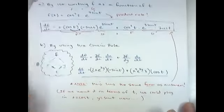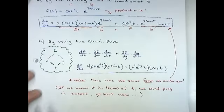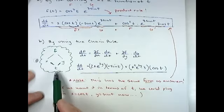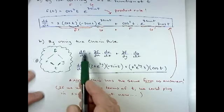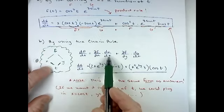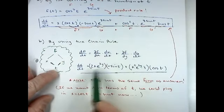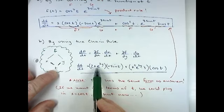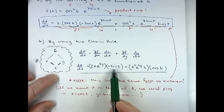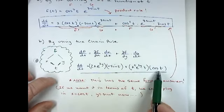That direct substitution is a fairly lengthy product rule. If we use the chain rule approach as we did the previous problem, using our mapping — f is a function of x and y, but both x and y are functions of t — the derivative of f with respect to t is: the partial of f with respect to x times dx/dt, plus the partial of f with respect to y times dy/dt. The partial with respect to x is 2x·e^(3y), and the derivative of cos(t) with respect to t is negative sine. The partial with respect to y is 3x²·e^(3y), and the derivative of sin(t) is cos(t).